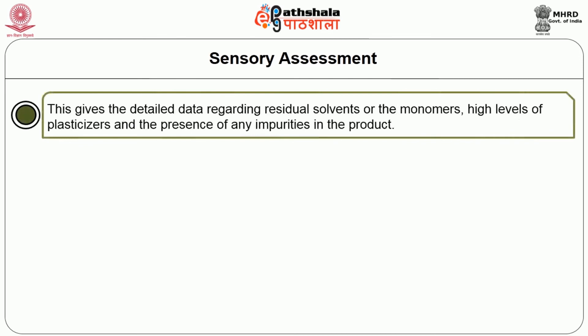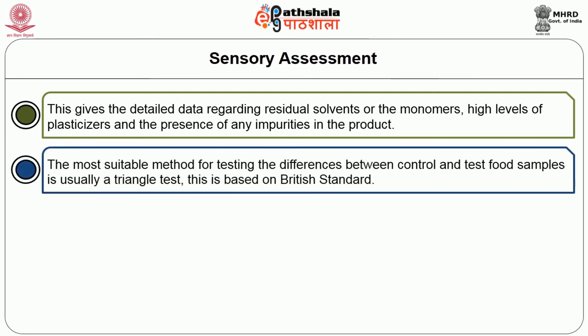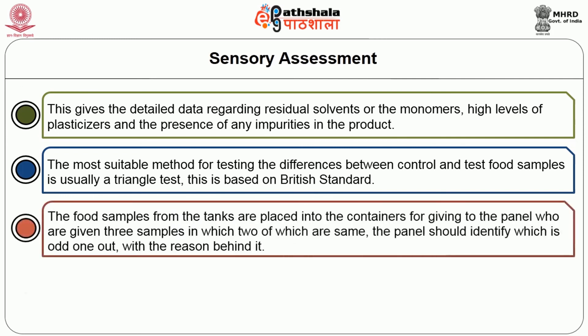The limitation is the inability to diagnose the identified problems, so it will be appropriate to use instrumental chemical analysis like chromatographic methods, which can be used to identify differences between a suspect packaging sample and a reference sample. This gives detailed data regarding residual solvents or monomers, high levels of plasticizers and the presence of any impurities in the product. The most suitable method for testing differences between control and test food samples is usually a triangle test based on British standard, where a panel is given three samples, two of which are the same, and must identify the odd one out with the reason behind it.